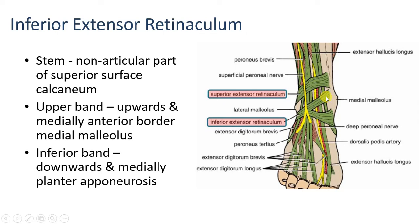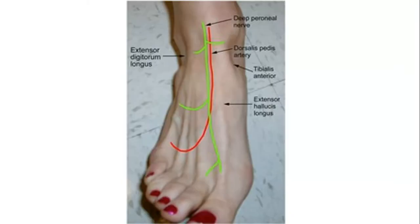The inferior extensor retinaculum has a Y shape. The stem is attached below the lateral malleolus to the superior surface of the calcaneum on the non-articulating part. It has two bands: the upper band attaches to the medial malleolus, and the lower band moves downward and attaches to the plantar aponeurosis.